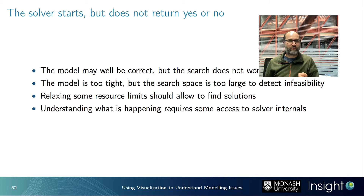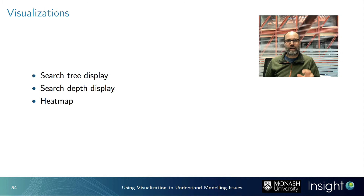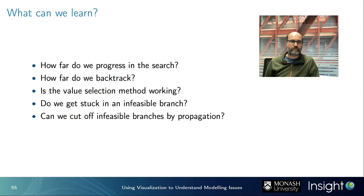The analysis here has two aims: understand what is happening in the solver, and extract suggestions on how to improve behavior. Visualizations that can help include displaying the search tree, search depth displays, and heat maps. From these we can learn: how far we progress in search, how far backtracking goes, whether value selection is working, whether we get stuck in infeasible branches, and whether we can cut off infeasible branches by adding constraints.